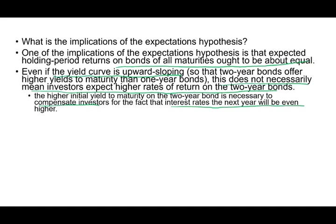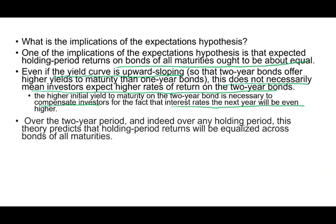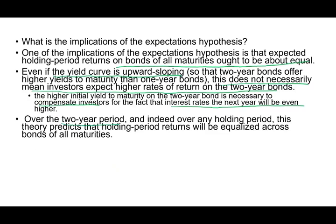Even if you invest for two years and earn slightly more, if you invest for one year and reinvest when it matures, you know what rate to reinvest at based on the two-year rate — because the expectations theory says you should earn the same over two years. The higher yield to maturity on the longer bond is necessary to compensate investors for the fact that interest rates will rise. Over any holding period, this theory predicts holding period returns will be equalized across bonds of all maturities.